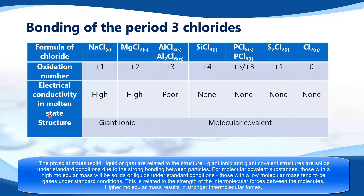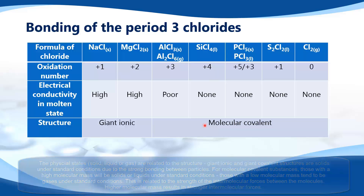Next we look at electrical conductivity in the molten state. Sodium chloride and magnesium chloride are giant ionic structures, so in the molten state they have free moving ions and high electrical conductivity. The remaining chlorides are molecular covalent structures — they don't have free moving ions, so they are not good electrical conductors.